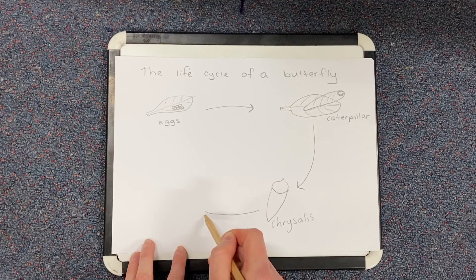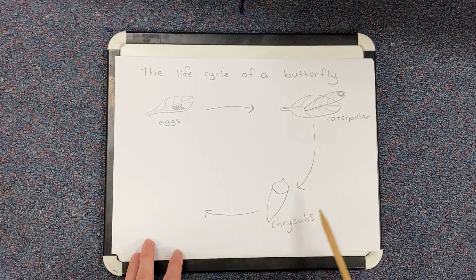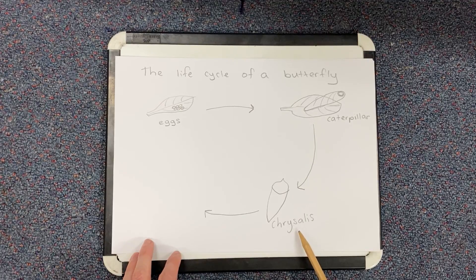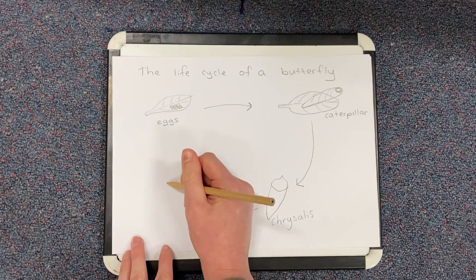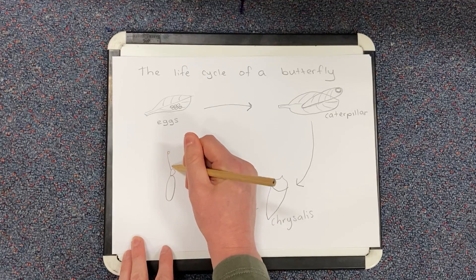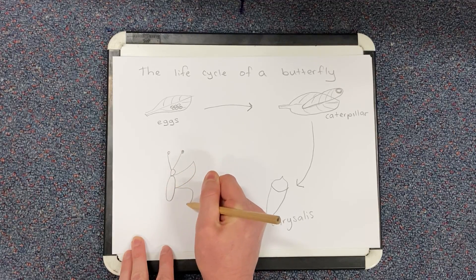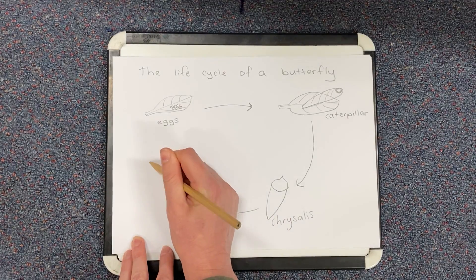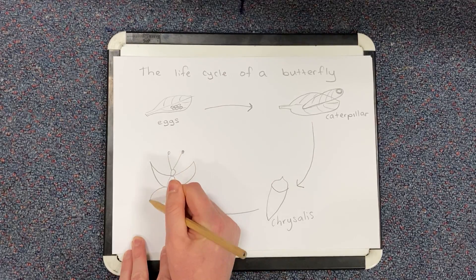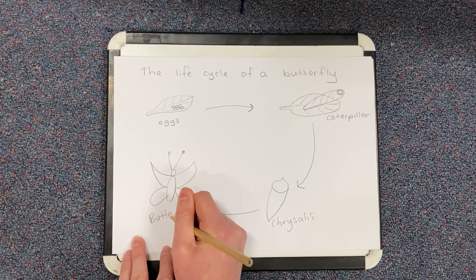Now I have another arrow. So I have my eggs. My eggs hatch into my caterpillar. Then I have my chrysalis. And then out of the chrysalis comes a beautiful butterfly. And I'm going to write butterfly under there.